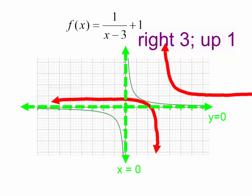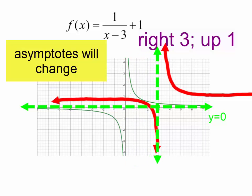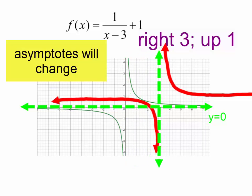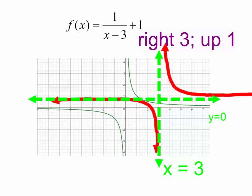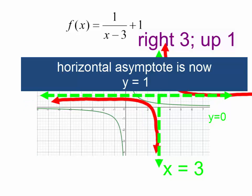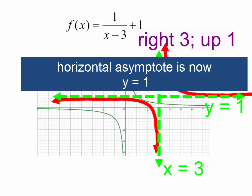Our asymptotes have changed. Our vertical asymptote has moved to the right 3 — it is now x equals 3. Our horizontal asymptote has moved up one space — it is now y equals 1.